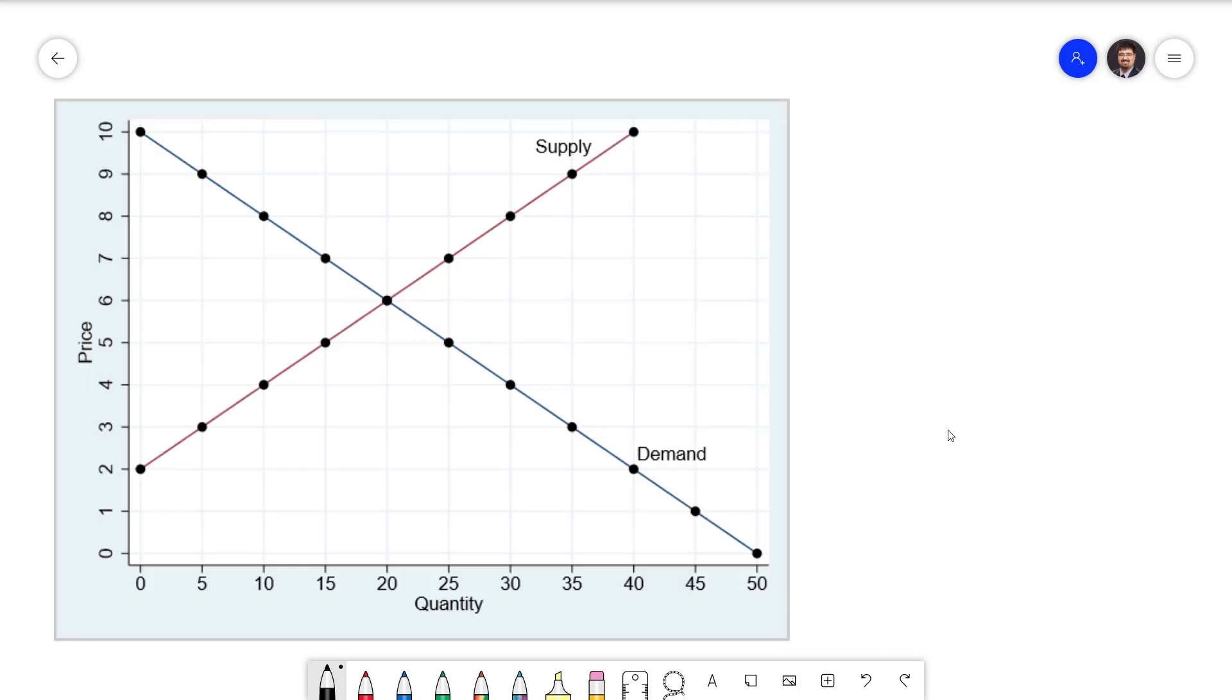We are going to start with price ceilings. We'll be doing this in the context of our example supply and demand curves that we've been working with over the last several videos. Note that in our example the equilibrium price is 6. I'll mark that off on our graph.